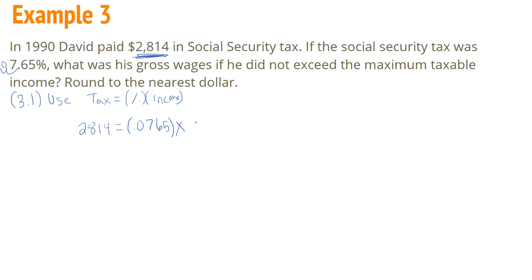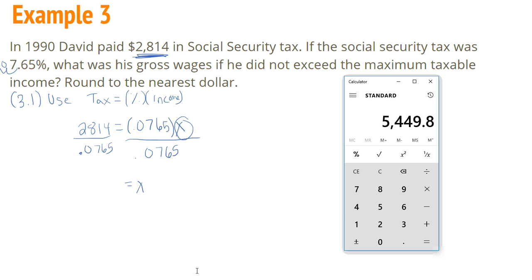So now I just have to solve for x. So I'm going to divide both sides by 0.0765 divided by 0.0765. So then x equals, and we need to use our calculator for that, $2,814 divided by 0.0765. And we get $36,784.31.